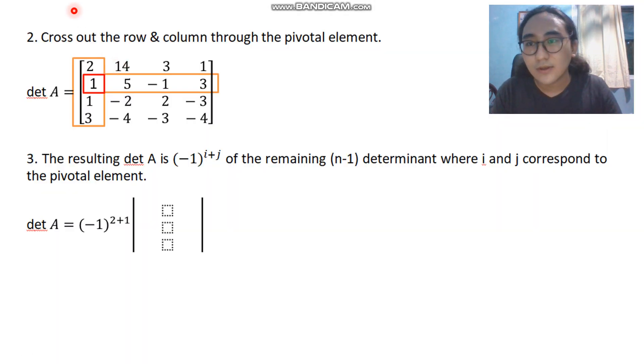So step 2 is to cross out the rows and columns that intersects through the pivotal element. So this is the column and this is the row. We're going to cross them out and the resulting determinant is negative 1 raised to i plus j. Remember our i is 2, row 2, and j is our column 1, so 1. So negative 1 raised to 2 plus 1, right?